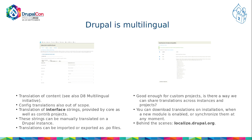Today we will be talking about interface strings provided by Core as well as other contrib projects. These strings can be manually translated on a Drupal instance, and then translations can be imported or exported as PO files. For quite some time, translations were distributed in a folder in modules and projects. This is all very well and good enough for custom projects.